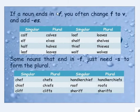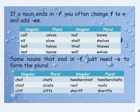If a noun ends in -f, you often change the f to v and add -es. For example: calf/calves, elf/elves, half/halves, leaf/leaves, loaf/loaves, shelf/shelves. Where the word has an ending in -f, we change it to -ves.